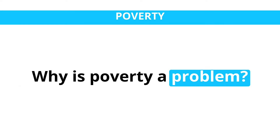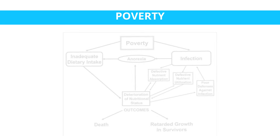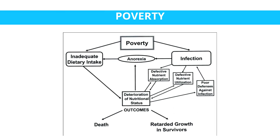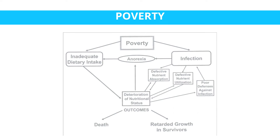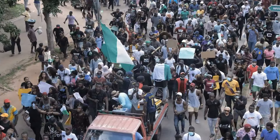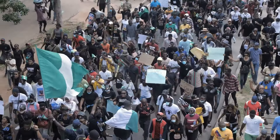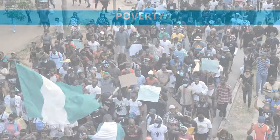Why is poverty a problem? Poverty is a significant problem with far-reaching consequences at both the individual and societal levels. Poverty leads to immense human suffering, depriving individuals of their fundamental rights, dignity, and quality of life. Lack of access to basic needs results in malnutrition, preventable diseases, and a reduced life expectancy. High levels of poverty exacerbate income and wealth inequality, leading to social tensions and potential unrest. This can undermine social cohesion, stability, and trust within communities and nations.